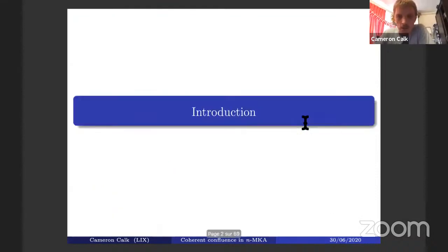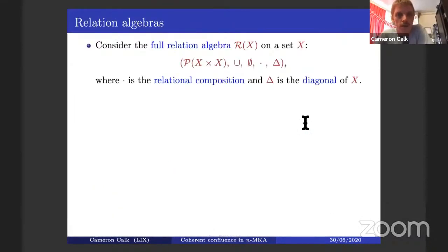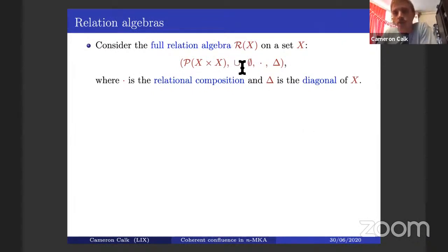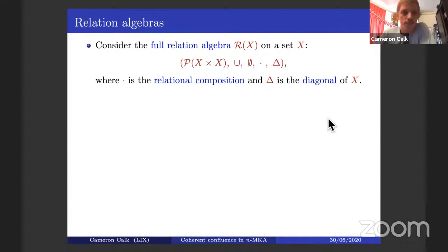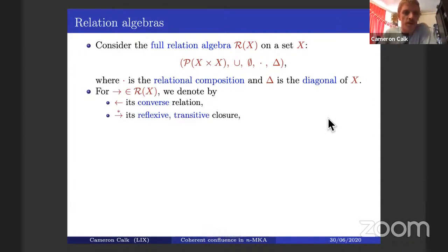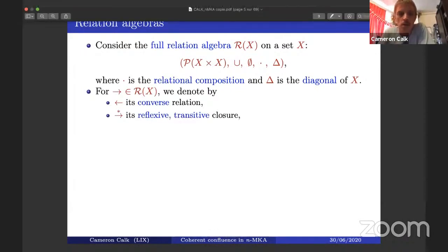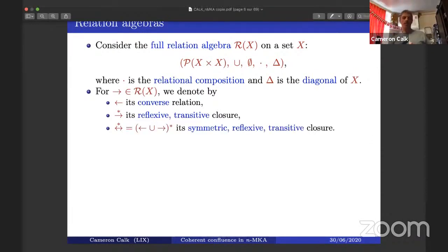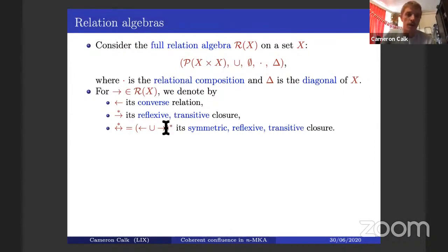Let's do something very grounded. Let's talk about a relation algebra on some set X. This is just the power set of X times X, equipped with an addition operation in the form of union, and a multiplication operation in the form of relational composition, for which the diagonal of X is the unit. We'll denote a relation by an arrow, and the converse relation by the opposite-facing arrow, with a star to denote the reflexive transitive closure, and a double-headed arrow with a star to denote its symmetric reflexive transitive closure — which is the sum of these two elements iterated.